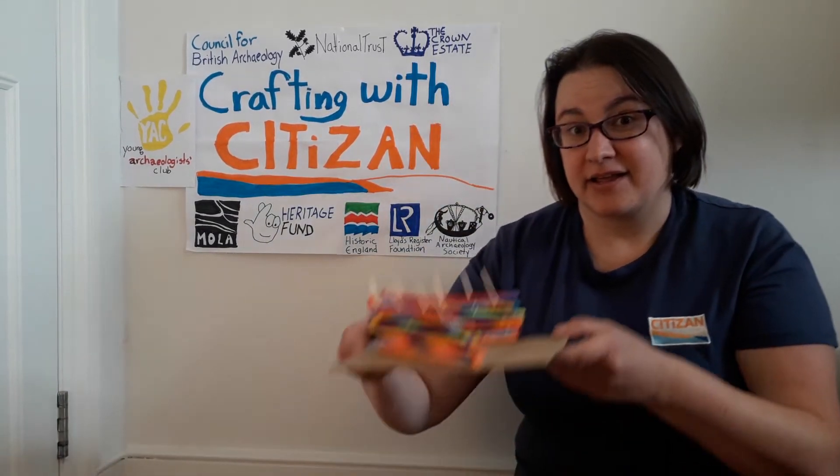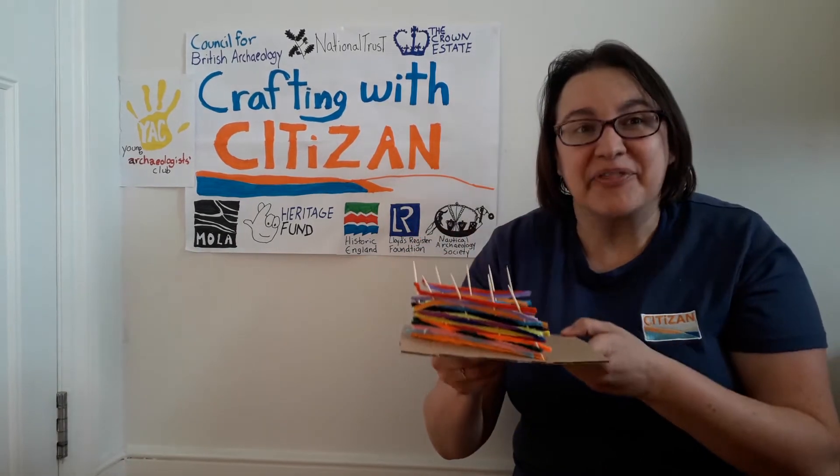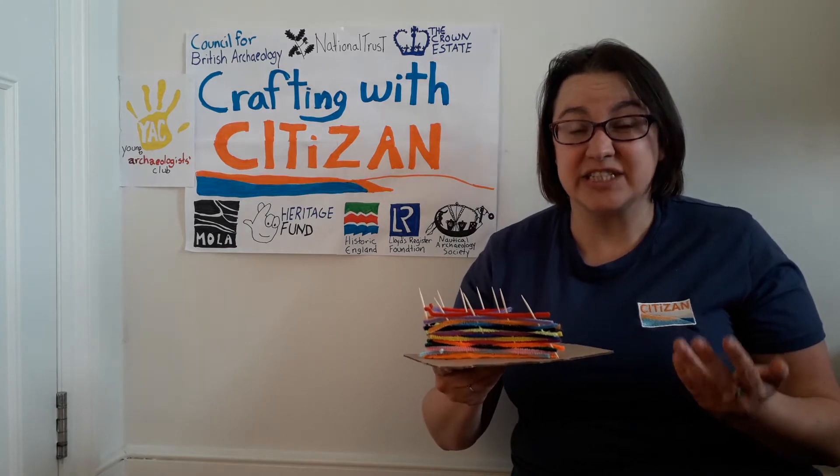This week I thought it might be fun for us to make fish weirs. It looks something like this. Now the oldest fish weirs in the UK are between six and eight thousand years old.